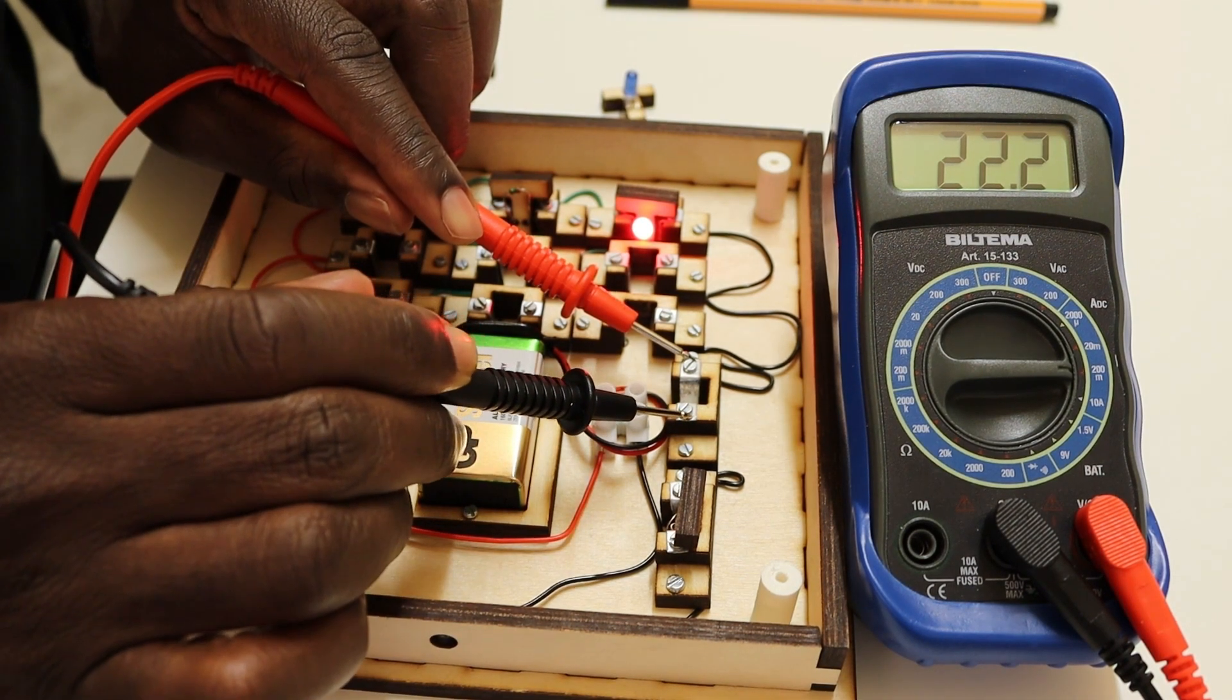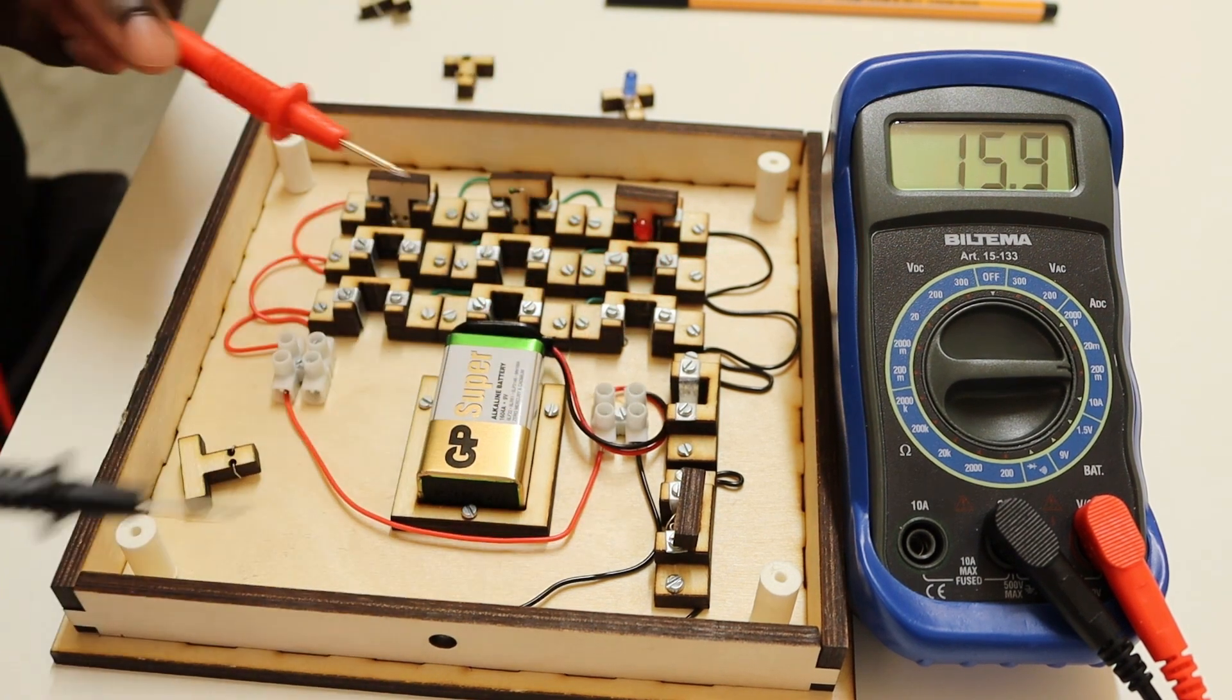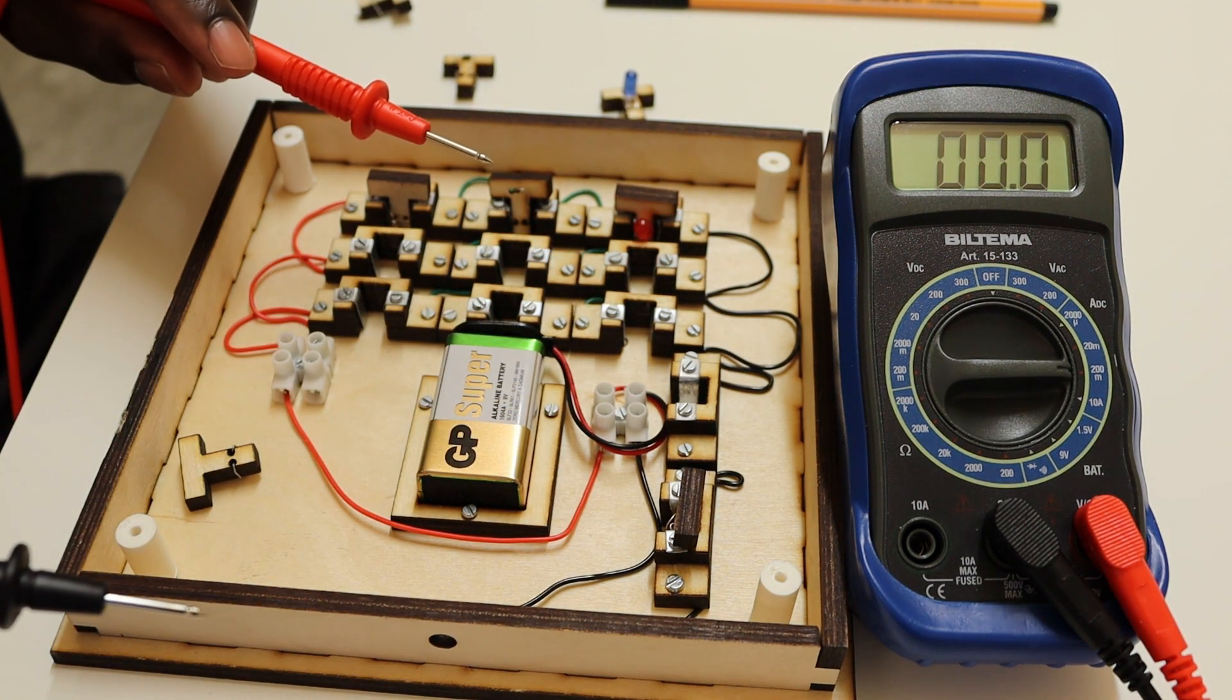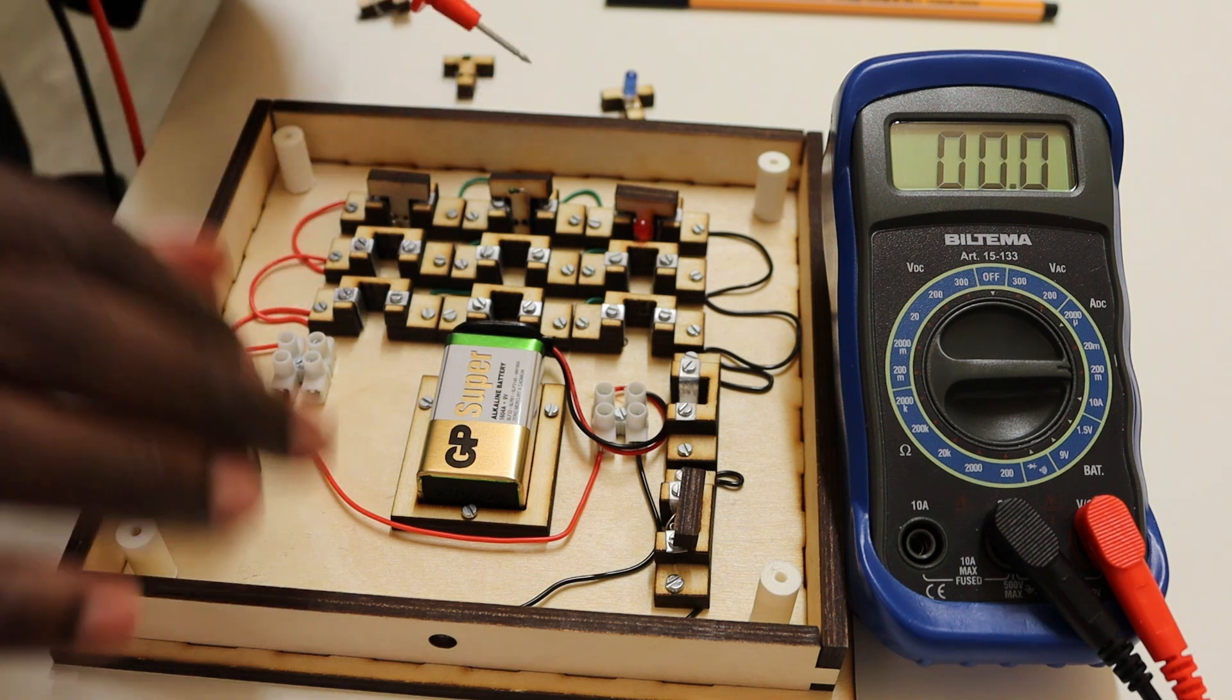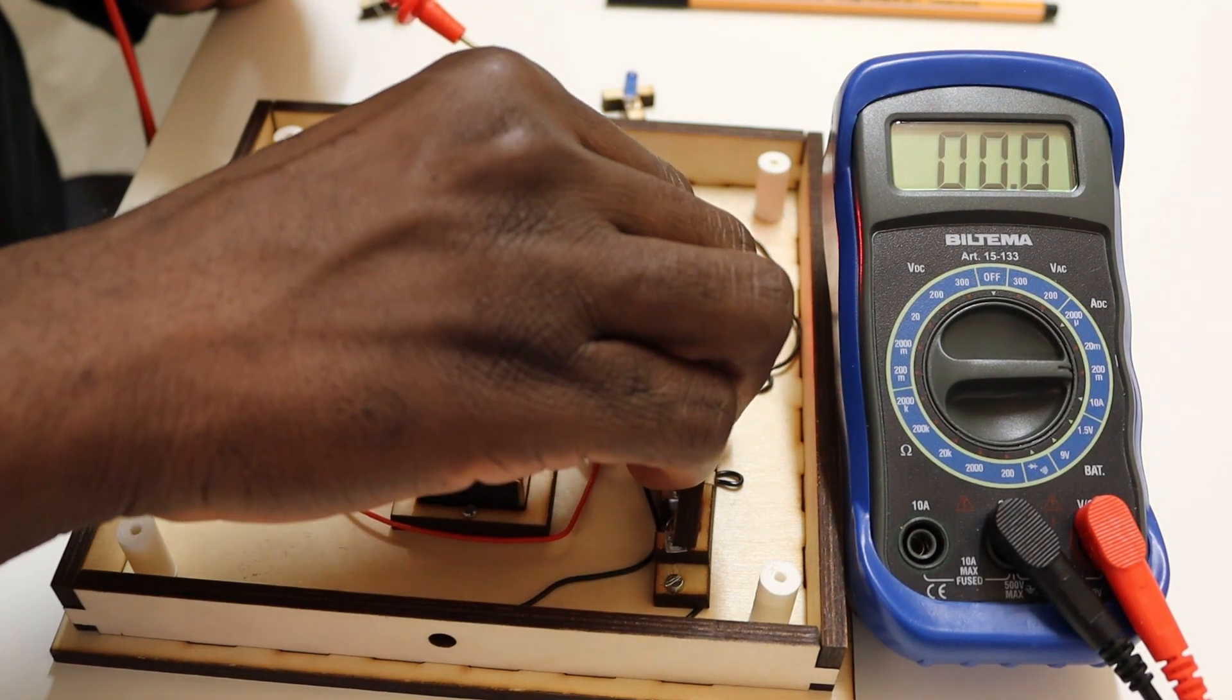It is in series. The meter is in series with the circuit; that's why the LED is lighting. If we take this from the circuit, from the connection, you see the LED goes off.